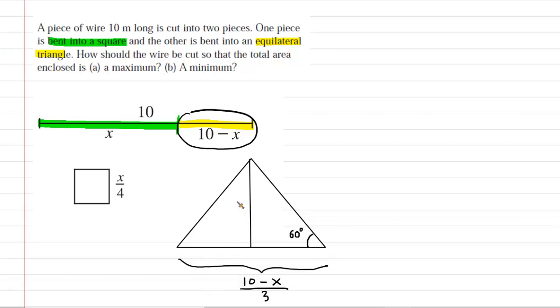But what we also need, as we will see later, is an expression for the height of this equilateral triangle. And to figure out an expression for that height, let's investigate the 30-60-90 right triangle.